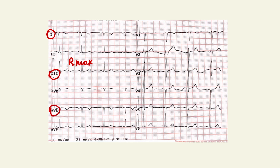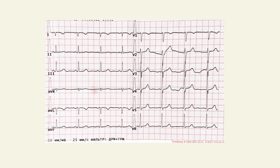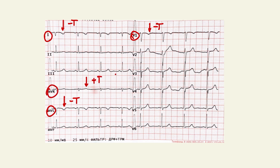Look at lead AVL — a similar situation. Now look at the T wave. We see a negative T wave at lead 1, lead AVL, and at lead V1. And a positive T wave at lead AVR. At lead AVR, the T wave should always be negative.